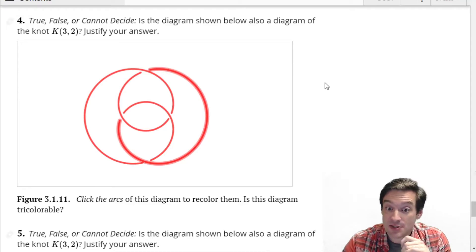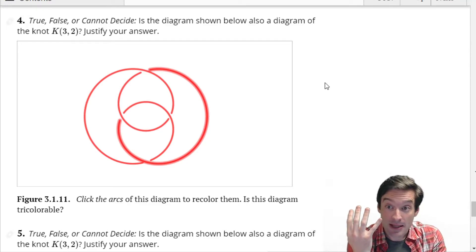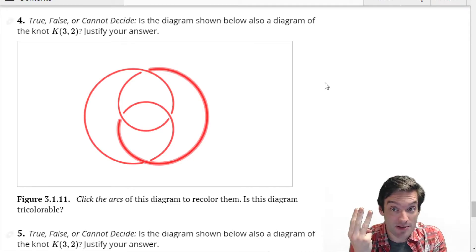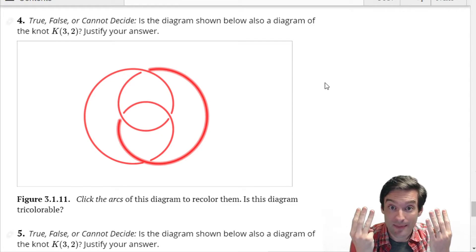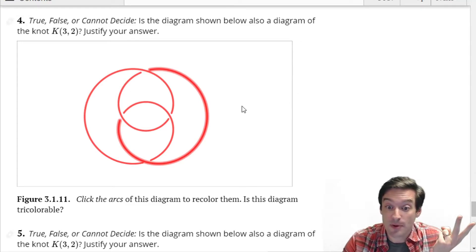So one of the observations that you can make about this diagram is it's got four arcs in it instead of three. And so by the pigeonhole principle in mathematics, if we only have three colors and we have to color four arcs, that means at least one pair of arcs has to share a color, right?